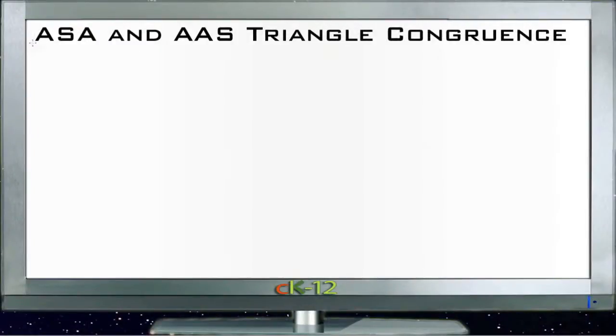All right, let's talk about angle side angle and angle angle side triangle congruence. Again, order is very important when we're discussing these rules. These are shortcuts for finding out whether two triangles are congruent in all ways without having to worry about finding all the sides and all the angles.